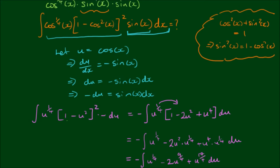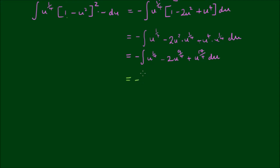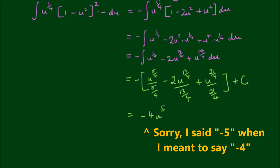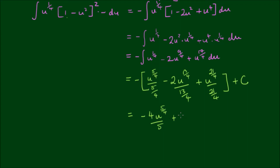Now we have three powers of u, so we can simply apply the power formula. We have negative outside of: u to the five-fourths divided by five-fourths, minus 2 times u to the thirteen-fourths divided by thirteen-fourths, plus u to the twenty-one-fourths divided by twenty-one-fourths. And of course we include the constant of integration c. Let's simplify: we get negative four-fifths u to the five-fourths, plus eight-thirteenths u to the thirteen-fourths, minus four-twenty-firsts u to the twenty-one-fourths, plus c.